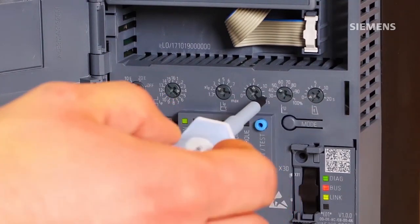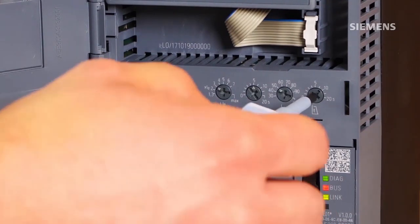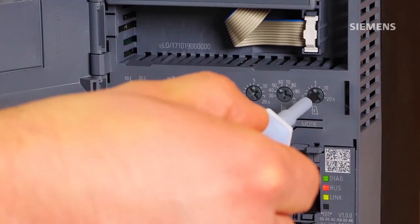The ramp down time can be set with the sixth rotary coating switch, in our case to 5 seconds.